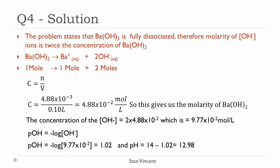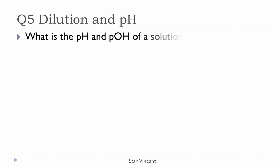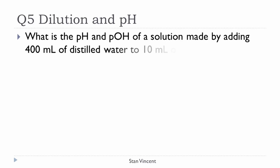Substituting into the equation pOH = -log[OH⁻]: pOH = -log(9.77 × 10^(-2)) = 1.02. Then pH = 14 - pOH = 14 - 1.02 = 12.98. So the final answer is pOH = 1.02 and pH = 12.98.